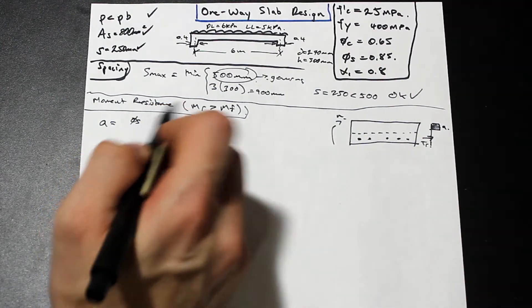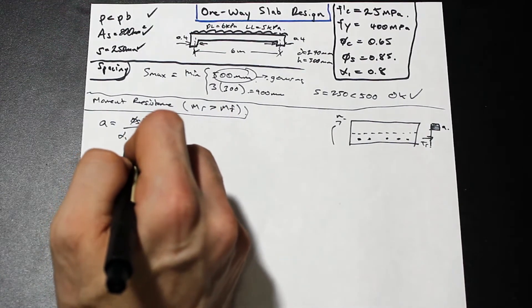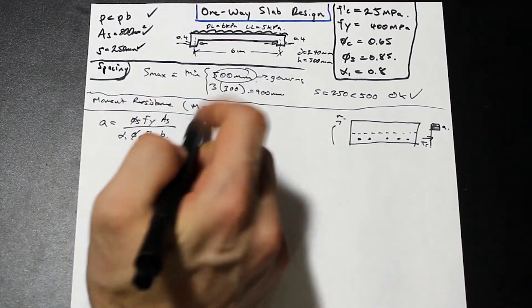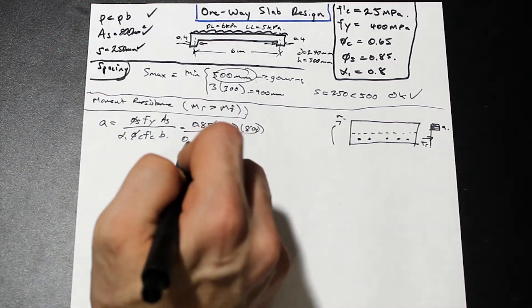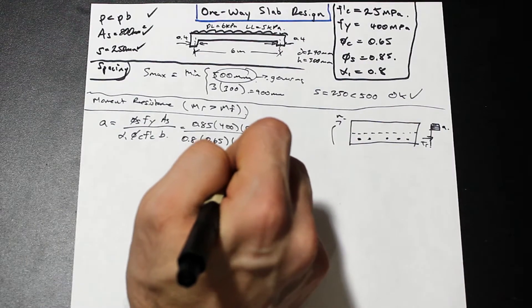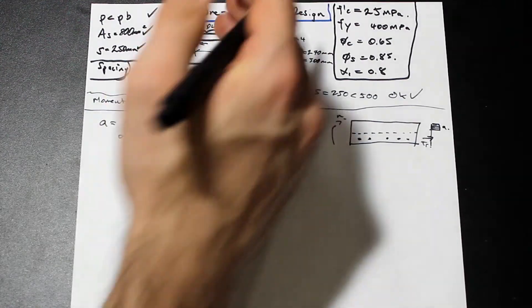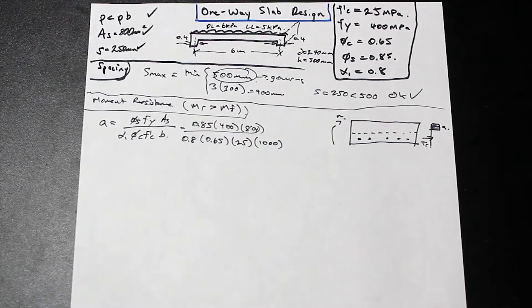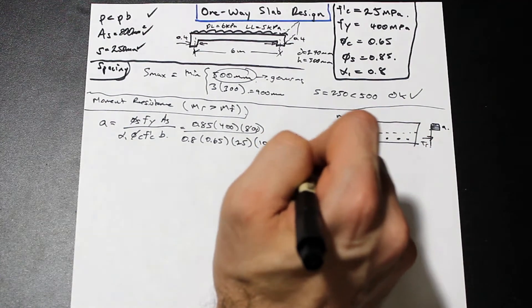A is simply equal to tr, which is phi s fy As, over alpha 1 phi c f prime c b. We equaled cr to tr and rearranged for a. If we plug in our values, that's 800 millimeters squared per meter. Alpha 1 for f prime c of 25 is simply 0.8. We don't have to calculate it. f prime c is 25 and our b here is simply 1,000 millimeters because we're doing a one meter strip. Always for one-way slabs we're designing for one meter strip. If we calculate this, we're going to get an a value of 21 millimeters.